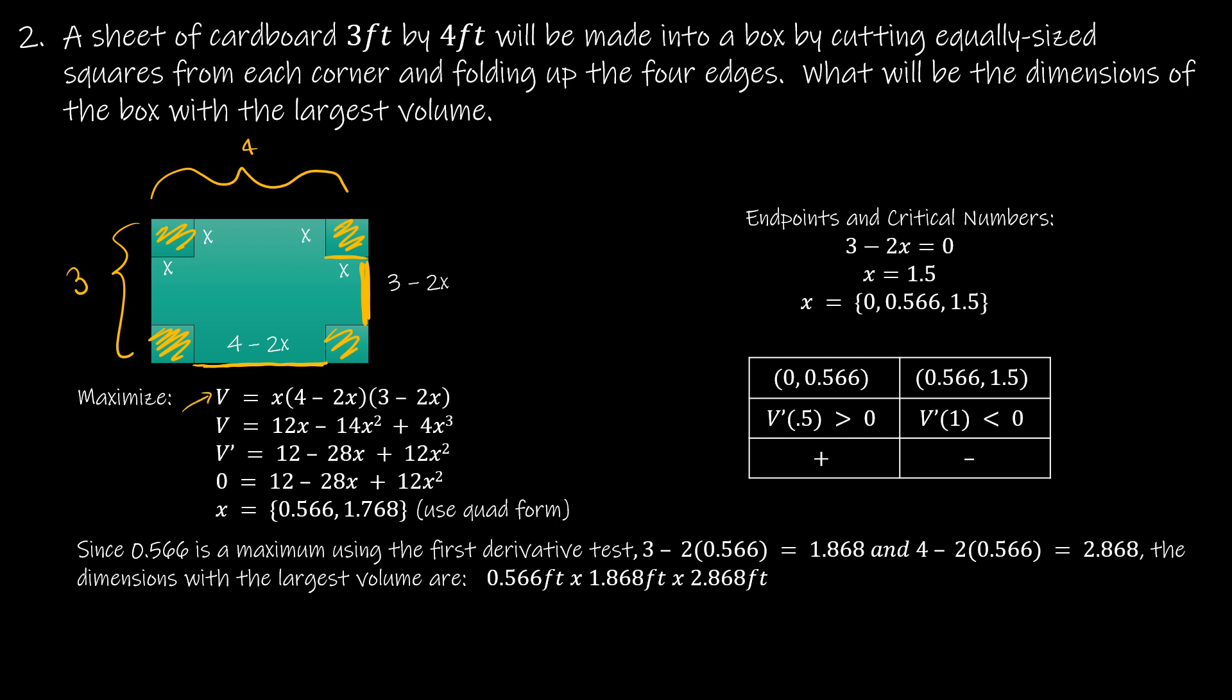I've done all of the work to simplify. I then found the derivative. I set it equal to 0 and I had to use the quadratic formula. And so here I actually had to use a critical number or an endpoint. So I said 3 - 2x, if that were 0, then x is 1.5. So I didn't have to use the 1.768 in my table.